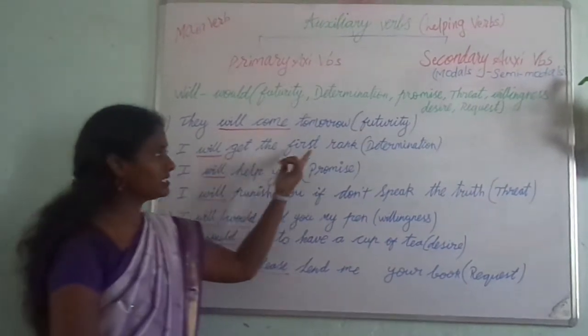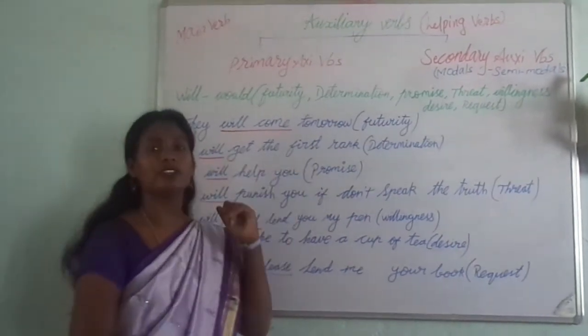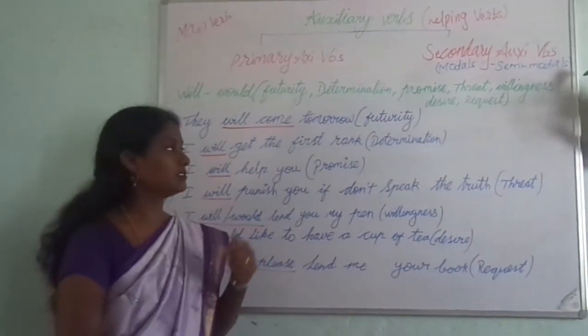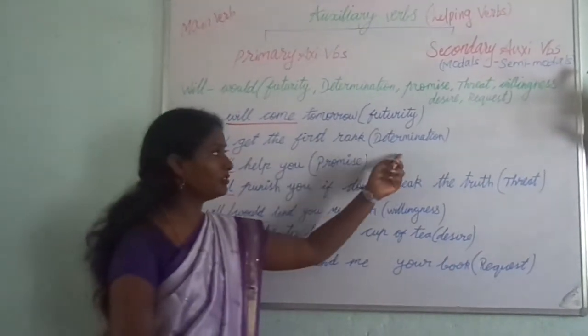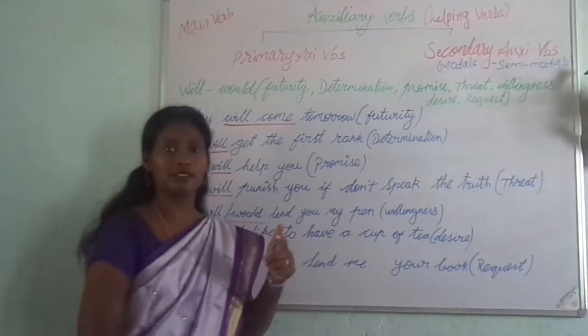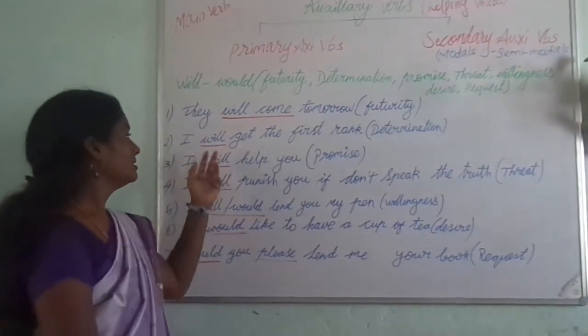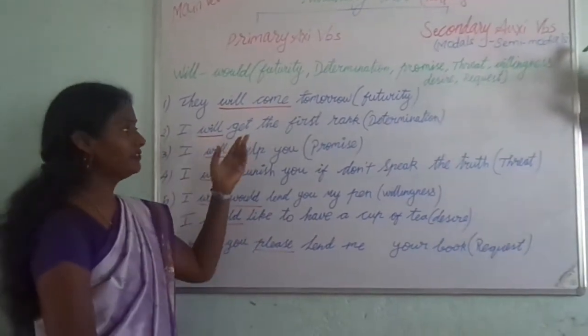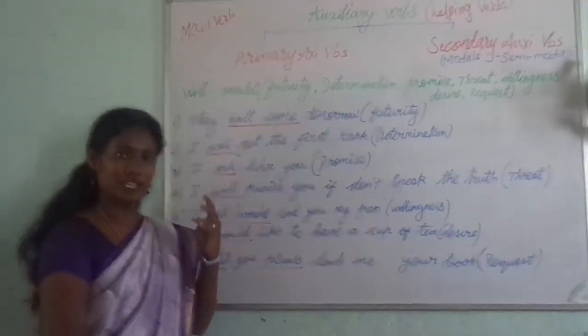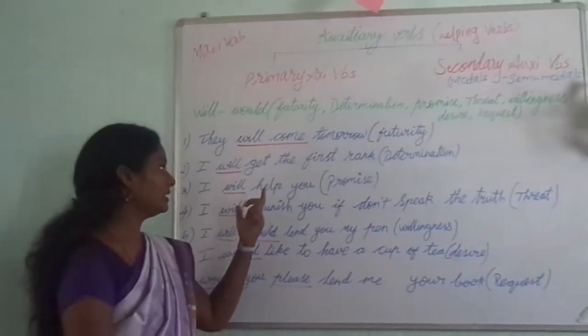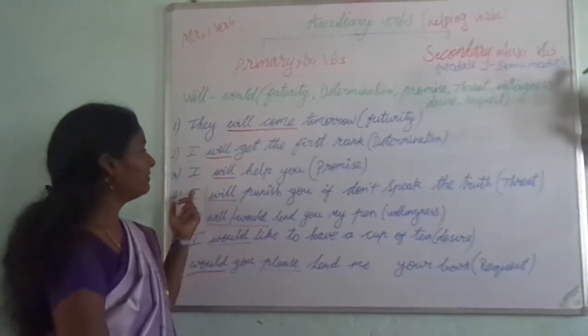'I will get the first rank.' He is saying very surely. Saying something with surety is determination. So 'I will do it' — someone is saying 'I will surely get the first rank.'